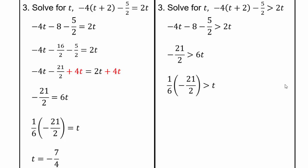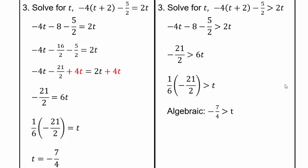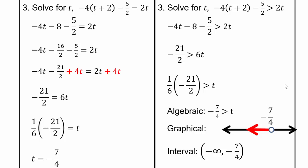Let's take a look at the inequality — we'll do the same thing. Remember: if you divide or multiply by a negative, you need to change the inequality sign. But here we're only dividing by 6, so we have negative 7 quarters is bigger than t algebraically. Graphically, here's negative 7 quarters and you are going to the left. T is smaller than negative 7 fourths. Interval notation: negative infinity to negative 7 quarters with round brackets on both ends because they are not included.